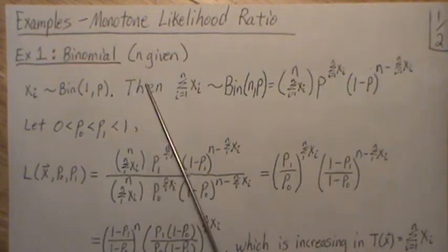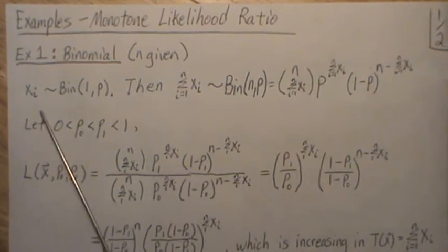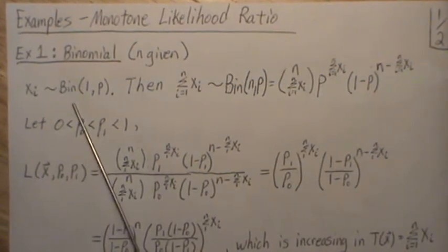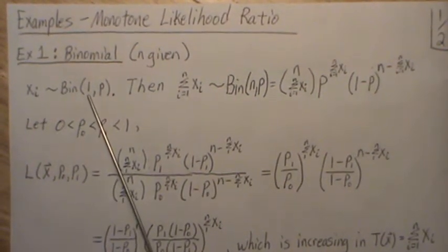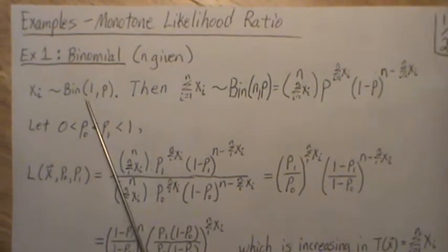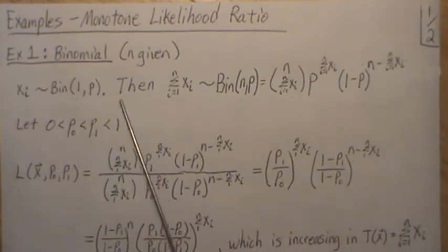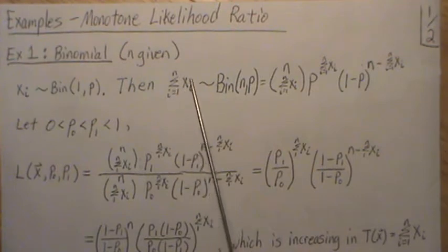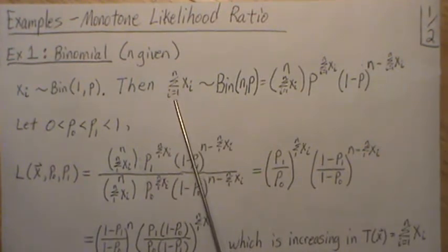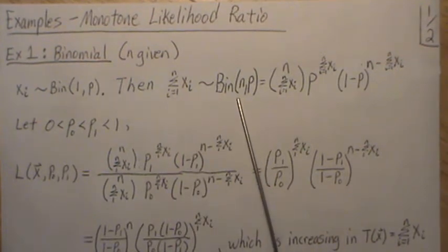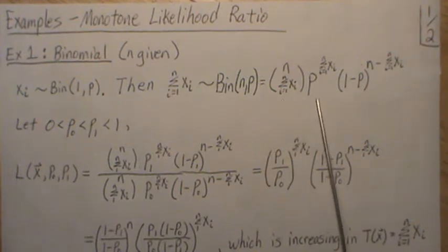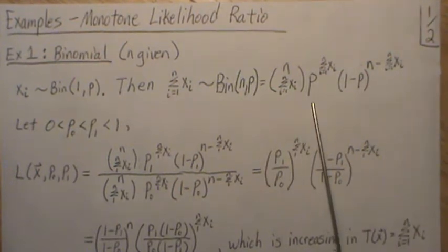Example 1 is a binomial where n is given, so our data is a binomial with parameters 1 and p, which some people would call a Bernoulli. Then if we add them up, this sum is distributed with the binomial with parameters n and p, and this is the probability mass function for a binomial.